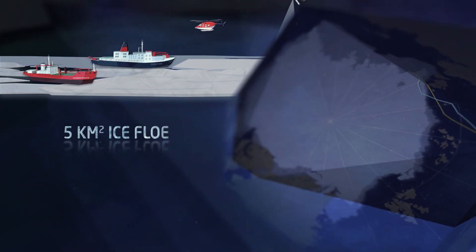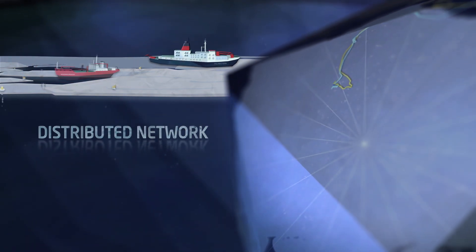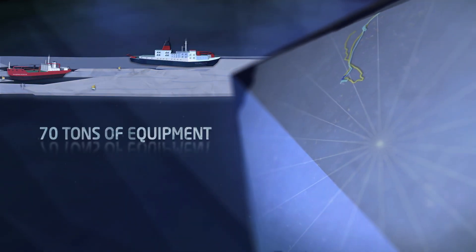At 85 degrees north and 134 degrees east, Polarstern allows herself to become frozen in the ice, and the drift begins.